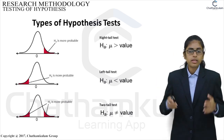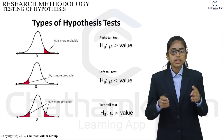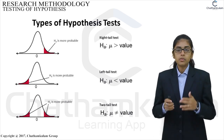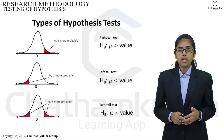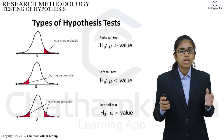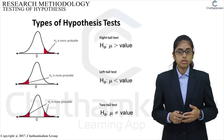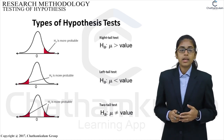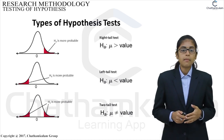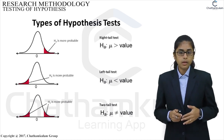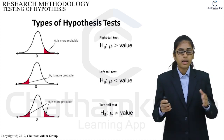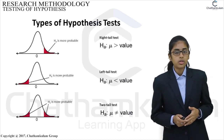In the case of large samples, when we are testing the significance of a statistic, the concept of standard error is used. It measures only sampling errors. Sampling errors are involved in estimating a population parameter from a sample instead of including all the essential information in the population.